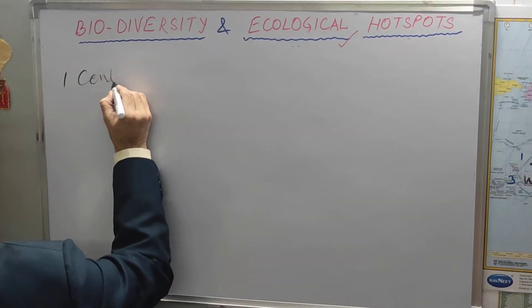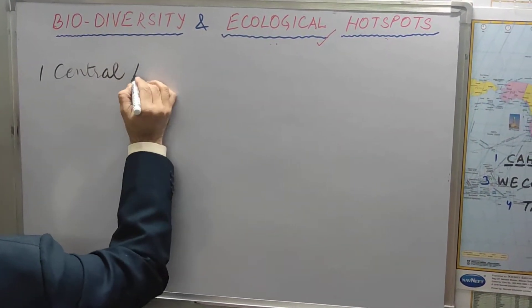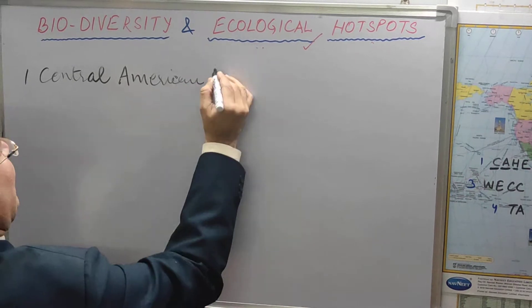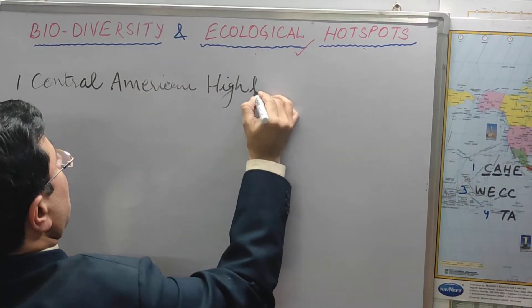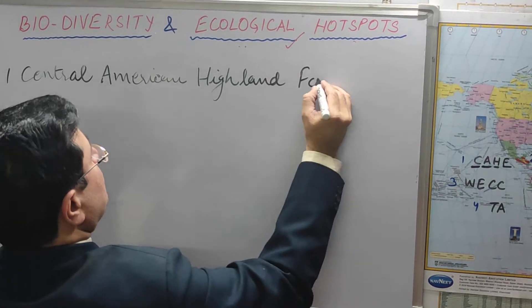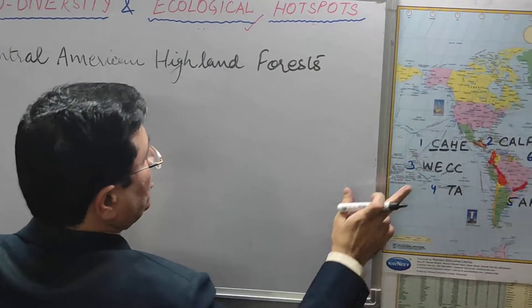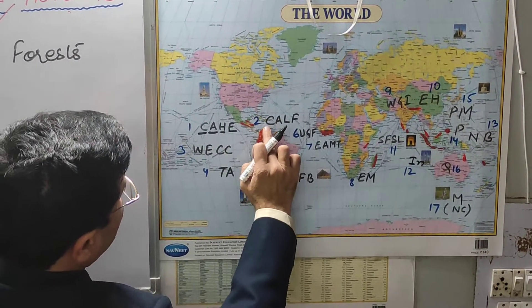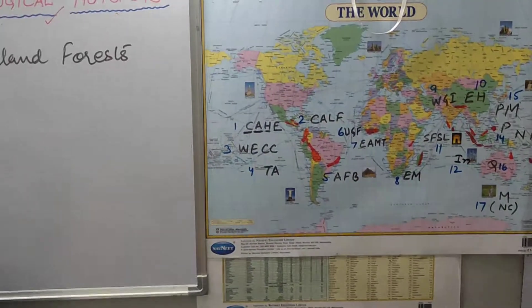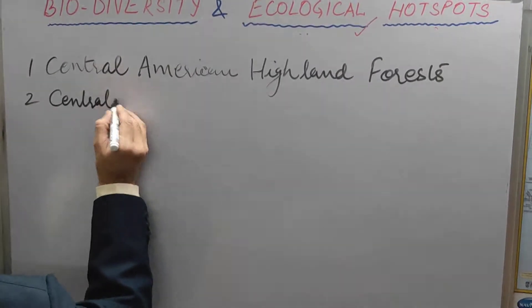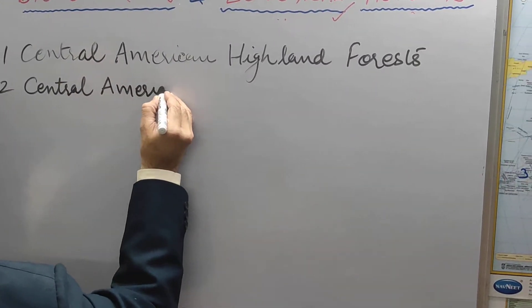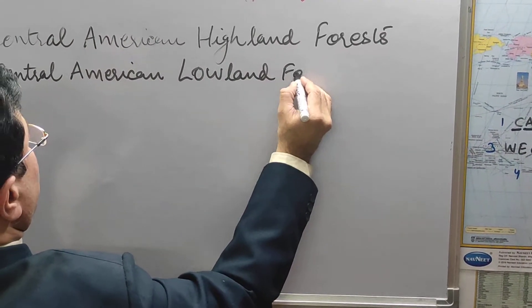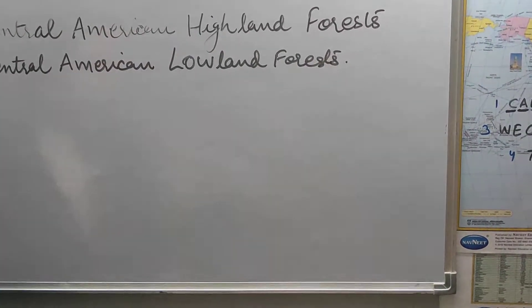Central American Highland Forest. On the eastern side of Central America we have Central American Lowland Forest. Both are very close to each other — both in Central America.